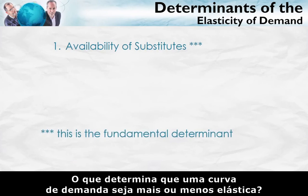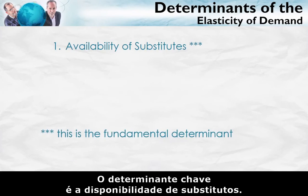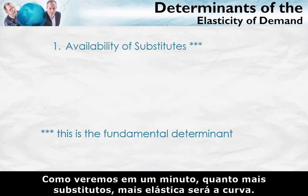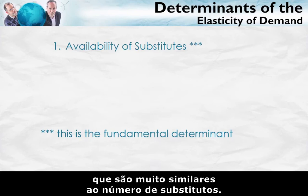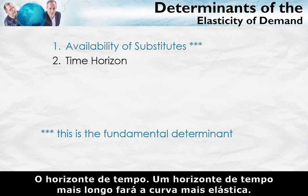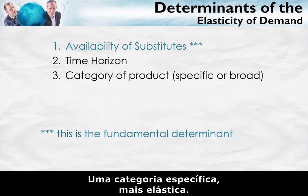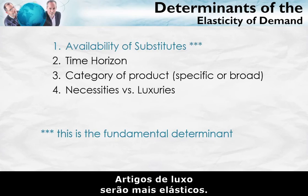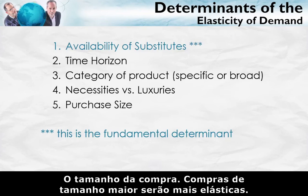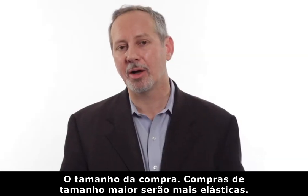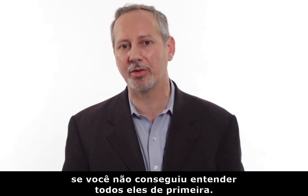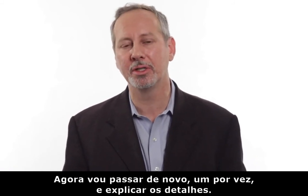What determines whether a demand curve is more or less elastic? The key determinant is the availability of substitutes. The more substitutes, the more elastic the curve. We can also identify more specific factors closely related to the number of substitutes: the time horizon — a longer time horizon makes the curve more elastic; the category of product — a broad category is less elastic, a specific category more elastic; necessities versus luxuries — luxuries are more elastic; and purchase size — bigger purchase sizes are more elastic. I'll go through each of these in turn.